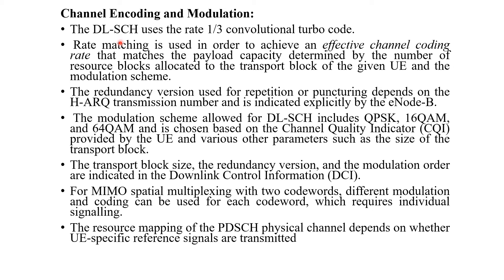Channel Encoding and Modulation: The downlink shared channel uses a rate 1/3 convolutional turbo code. Rate matching is used to achieve an effective channel coding rate matching the payload capacity determined by the number of resource blocks allocated and the modulation scheme. The redundancy version used for repetition or puncturing depends on the HARQ transmission number and is indicated explicitly at the E-Node. The modulation scheme for the DL-SCH includes QPSK, 16QAM, or 64QAM and is chosen based on the channel quality indicator provided by the UE. The transport block size, redundancy version, and modulation order are indicated in the Downlink Control Information (DCI). For MIMO spatial multiplexing with two codewords, different modulation and coding can be used for each codeword.